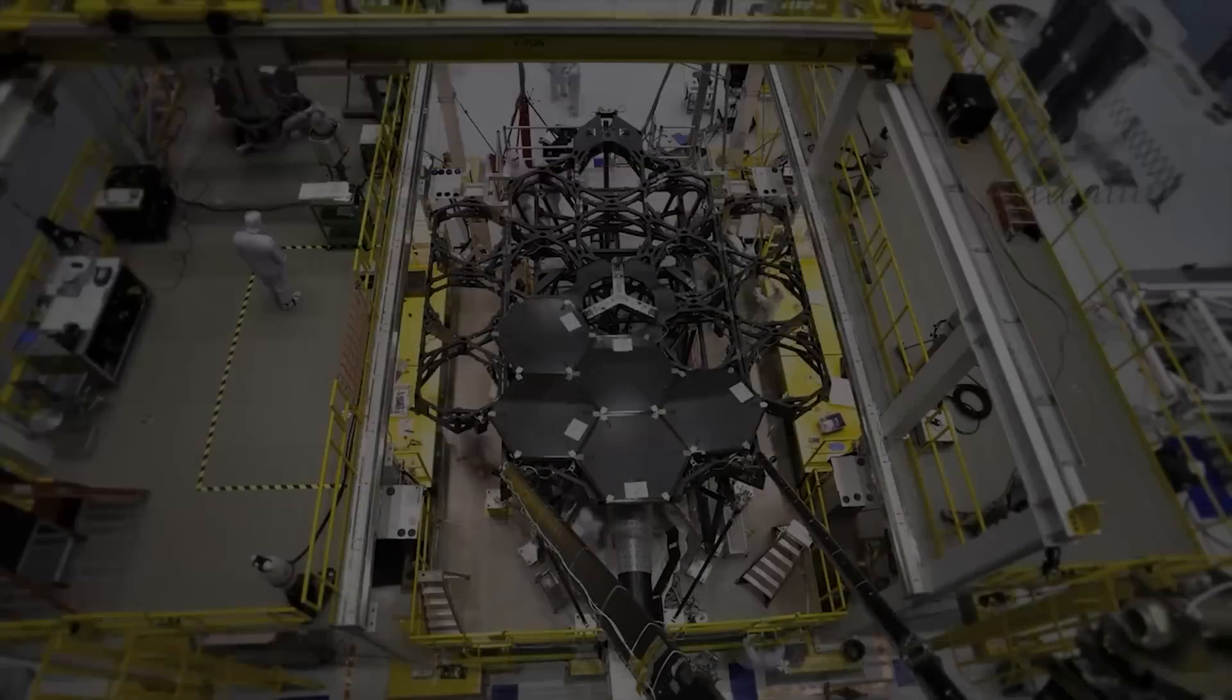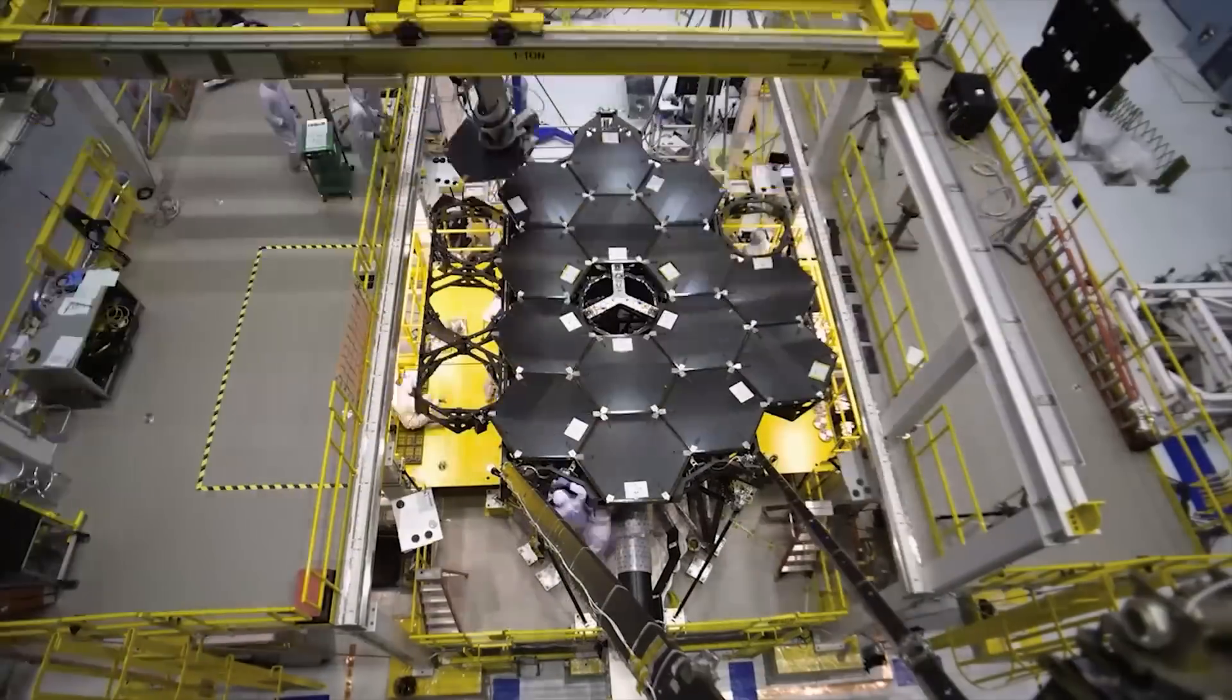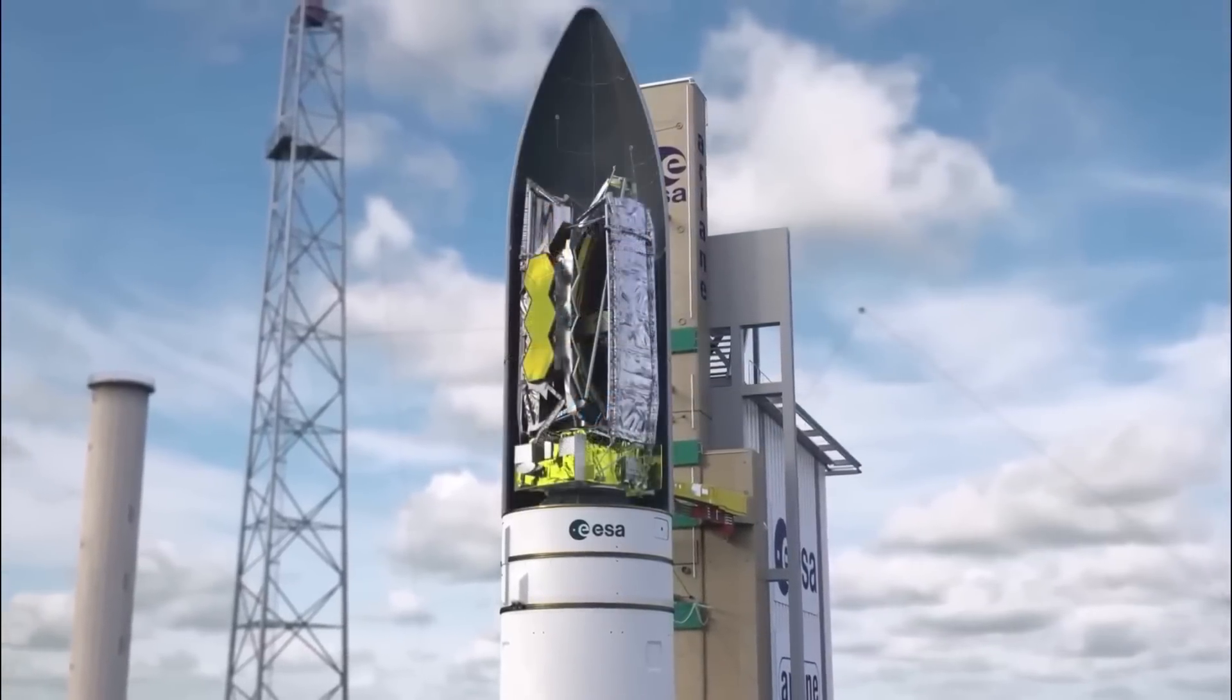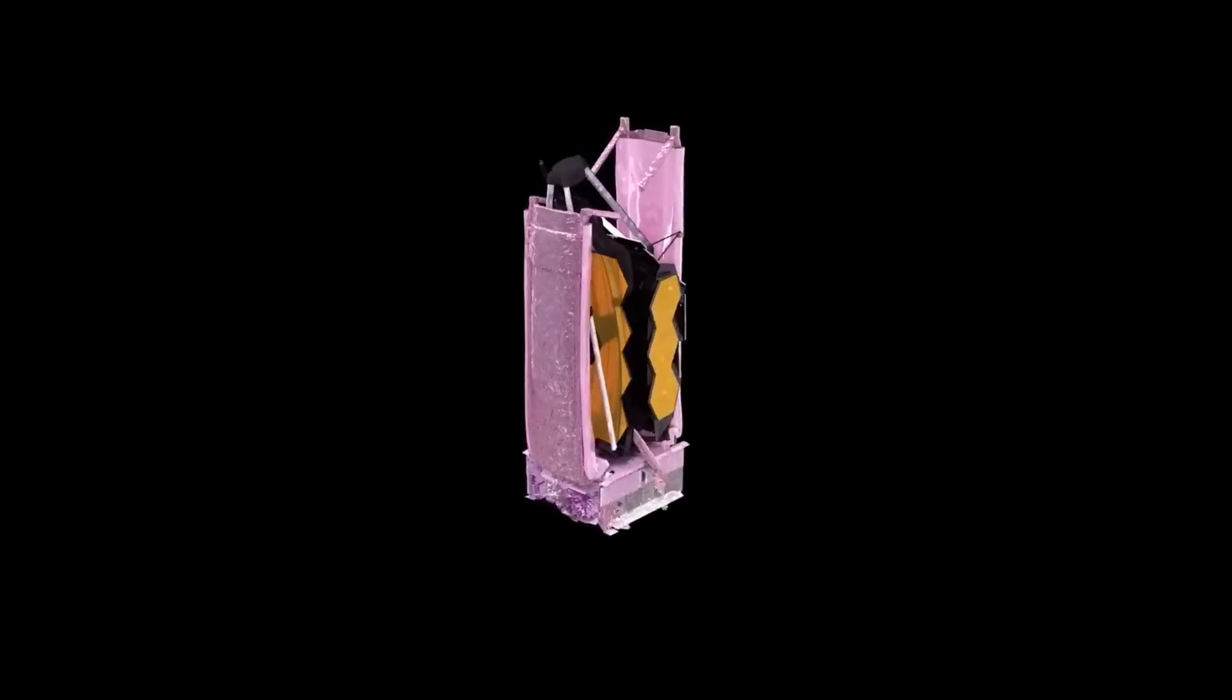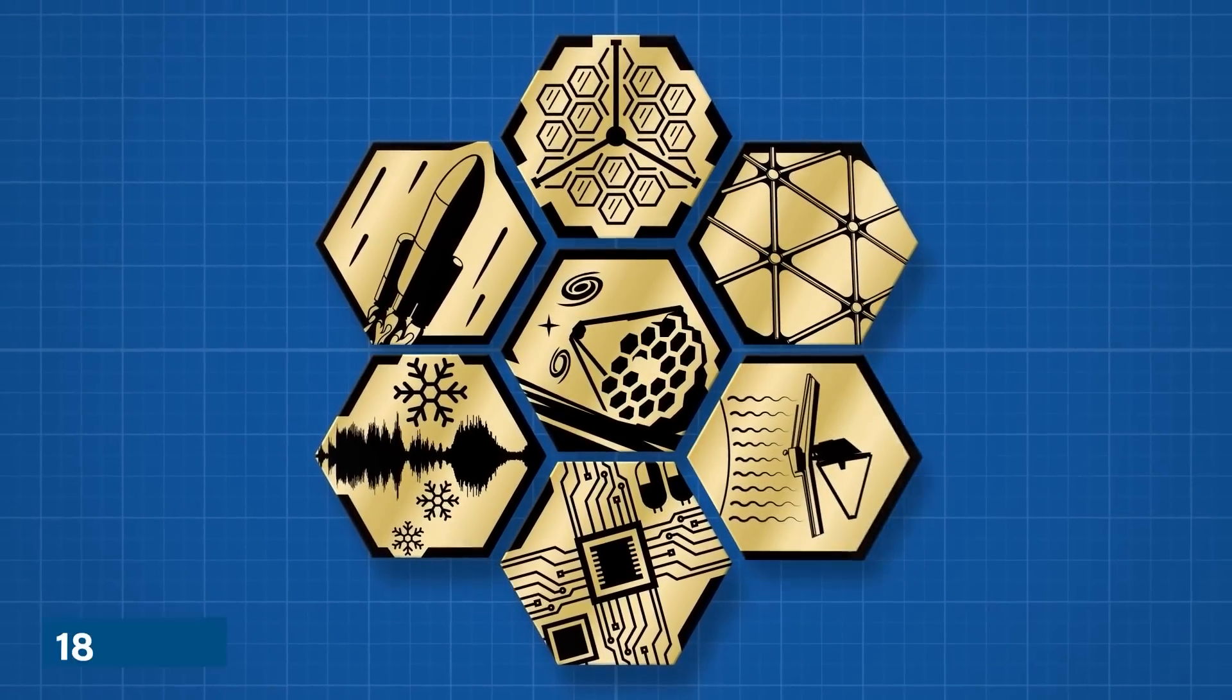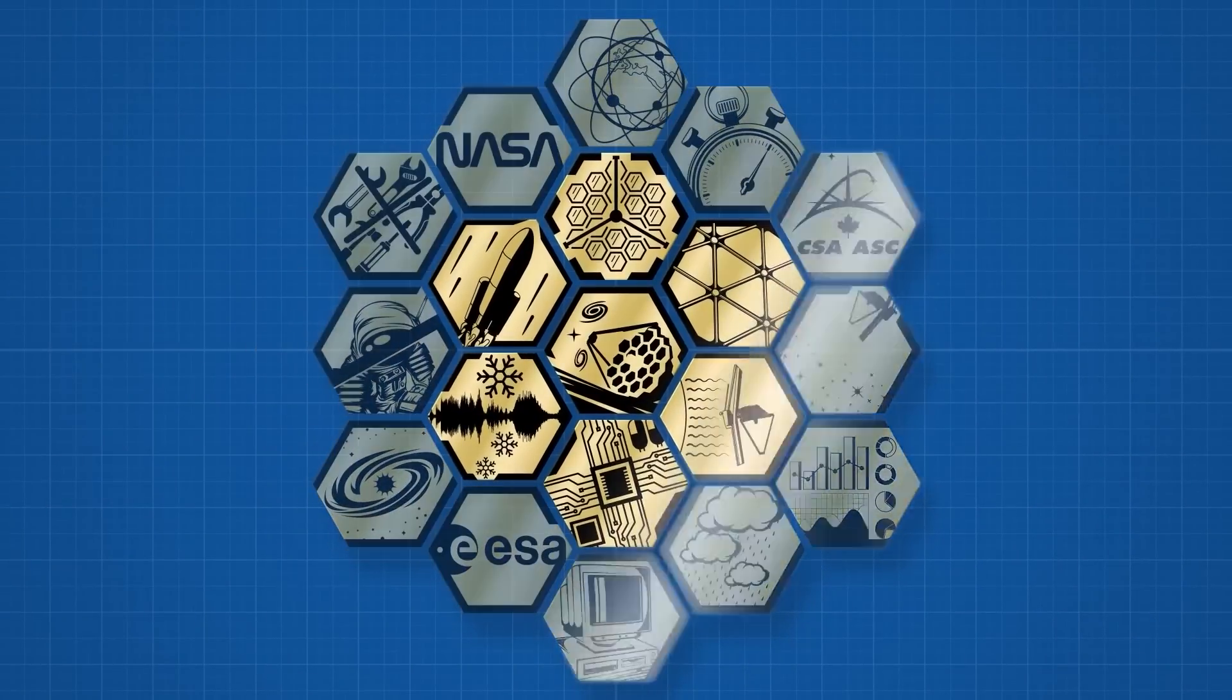The very design of the telescope presented formidable obstacles. The JWST had to be crafted to fit within the confines of a launch rocket, making its construction an intricate puzzle. It had to be folded, its heat shield unfurled, and its primary reflecting mirror delicately cut into 18 pieces to ensure successful deployment.